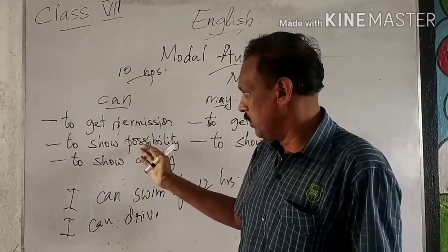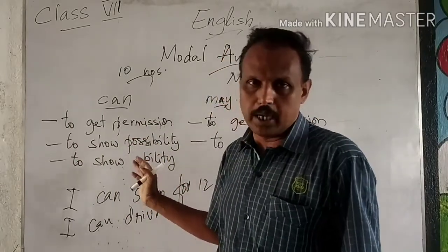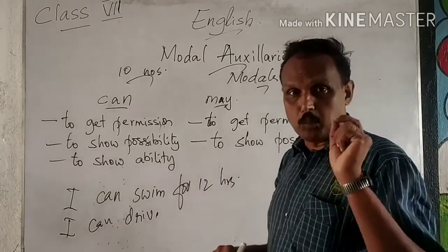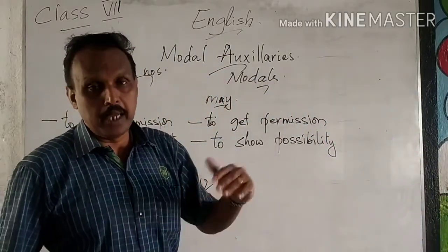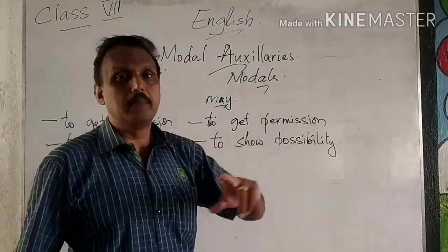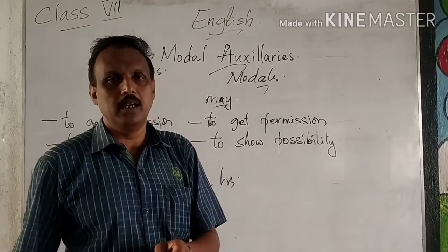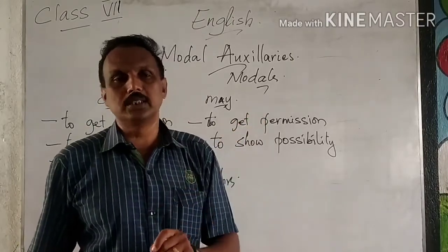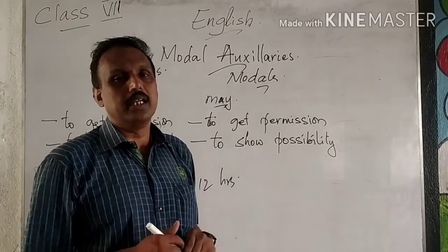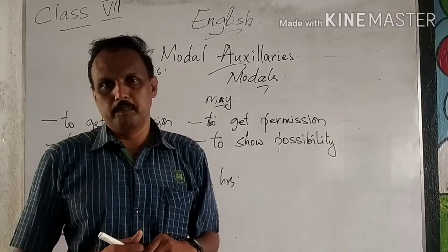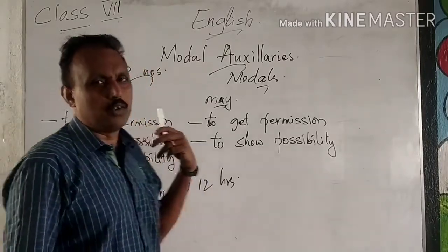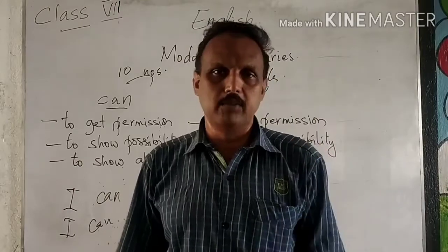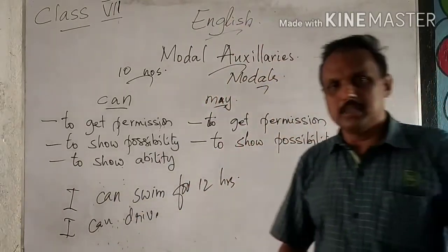So today we saw these two basic modals — can and may. Can is used for permission, possibility, and ability. May is used for permission and possibility. Most of the time when showing possibility, we use 'may' — 'It may rain today, it may not rain today.' When you use 'will,' it becomes certain: 'It will rain today' means it will surely rain. For formal permission, the correct form is always 'May I come in, sir?' or 'May I go for a swim?' Informally, with friends or family, you can say 'Can I go for a swim?' Thank you very much, have a nice day.